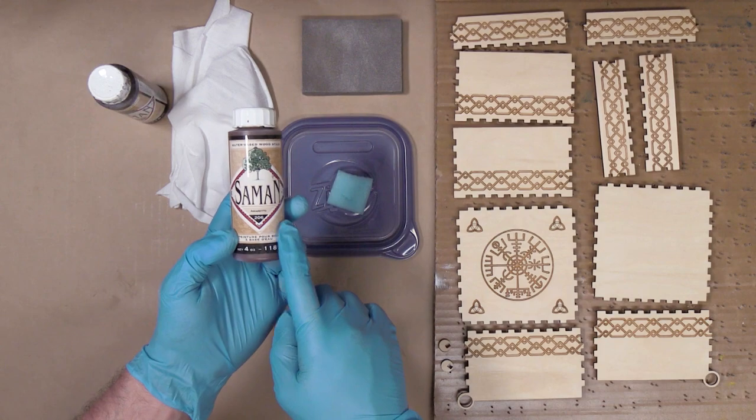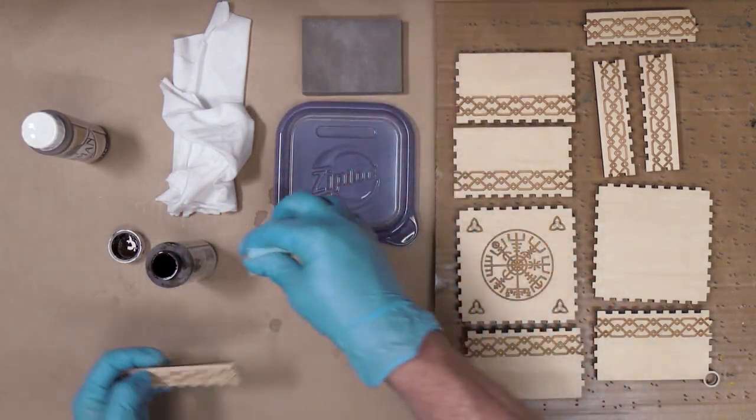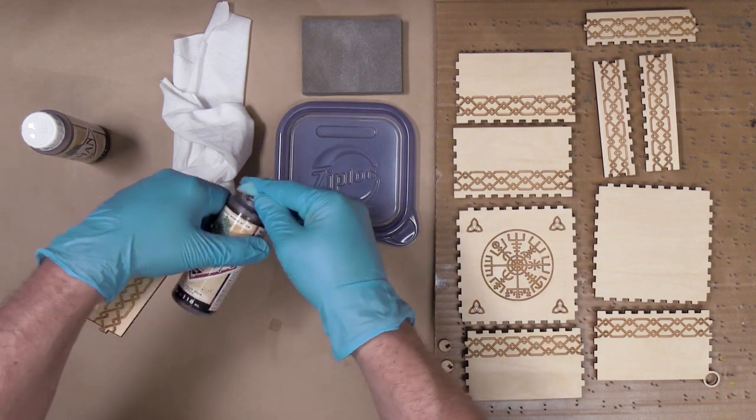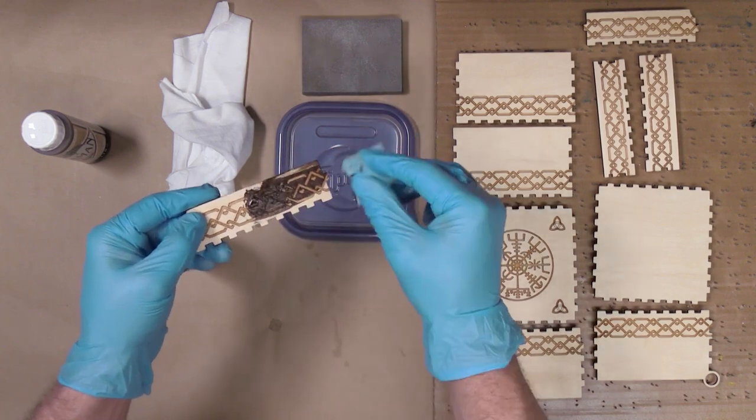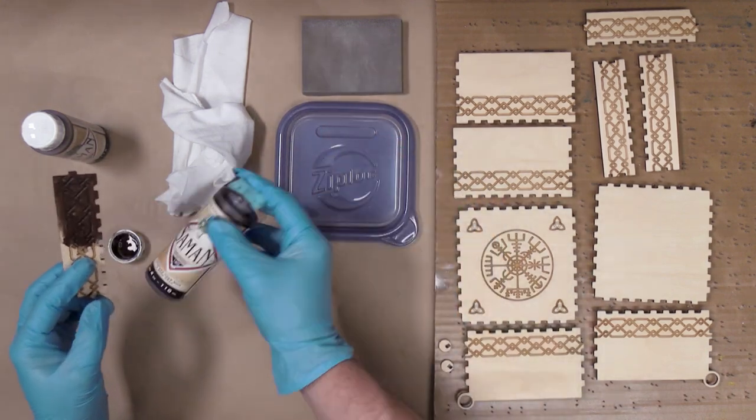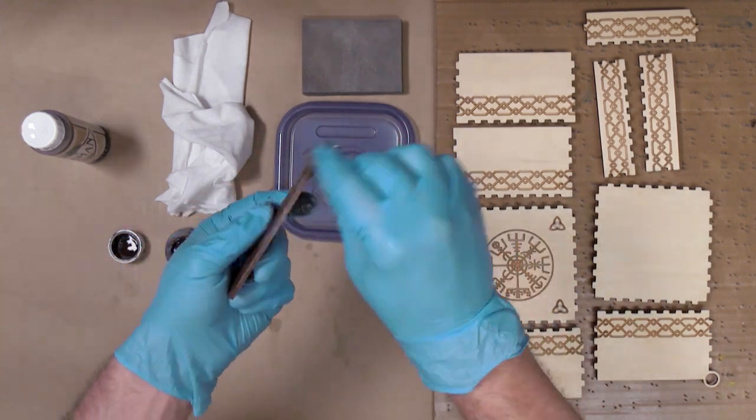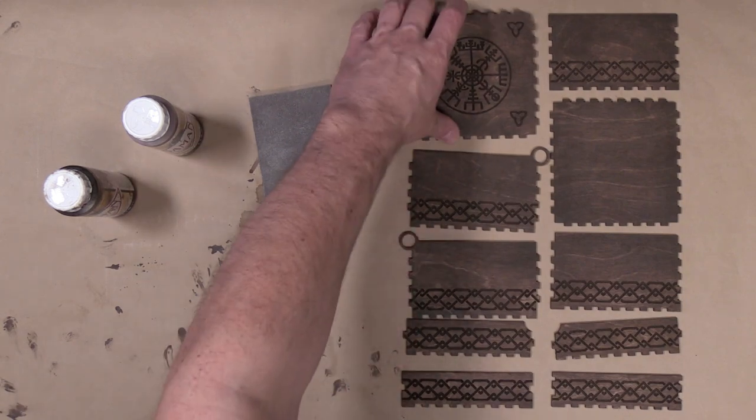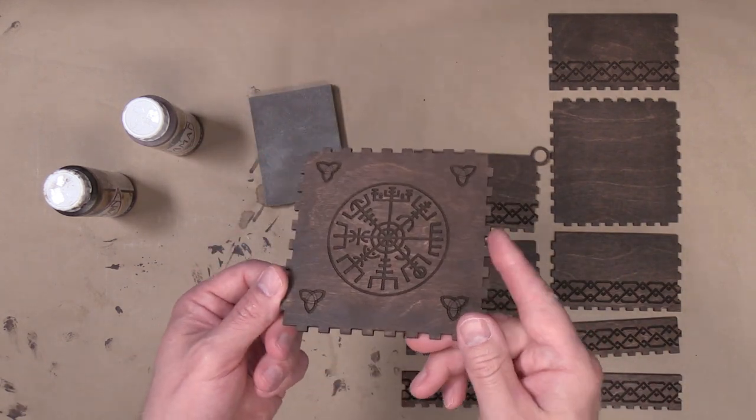To apply the stain I'm going to simply use a piece of sponge and wipe it onto each piece, and then I'm going to wipe any excess off using a piece of white rag.